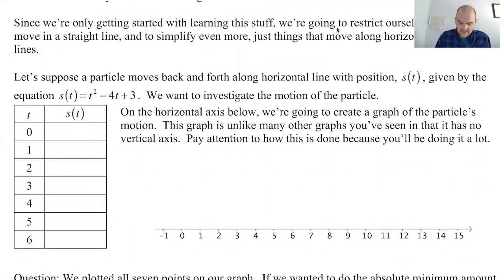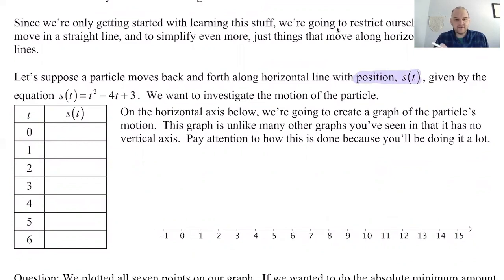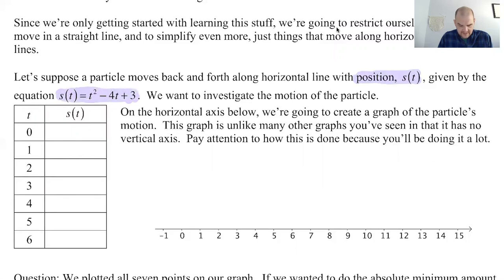A very common thing to do for position is to refer to it as s of t — you're going to see that all the time. So we have a particle moving back and forth along a horizontal line with position s of t given by the equation s(t) = t² − 4t + 3, and we want to talk about the motion of the particle.